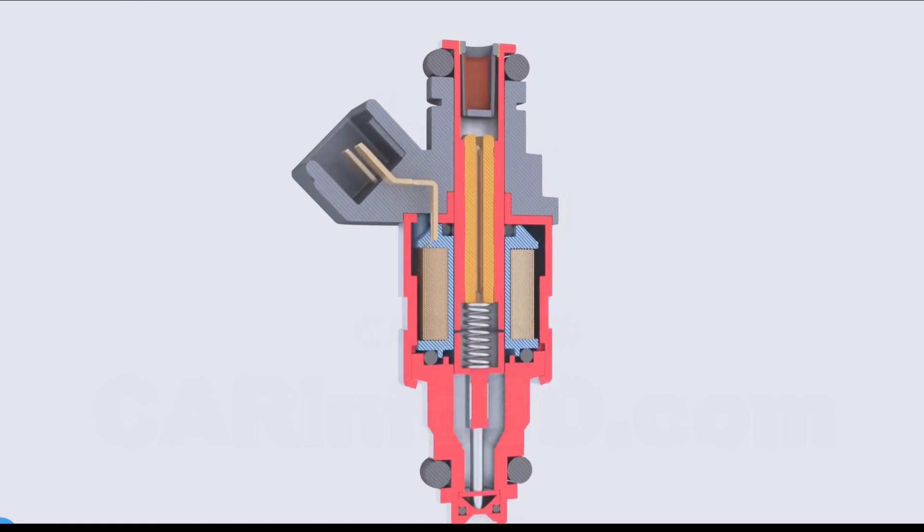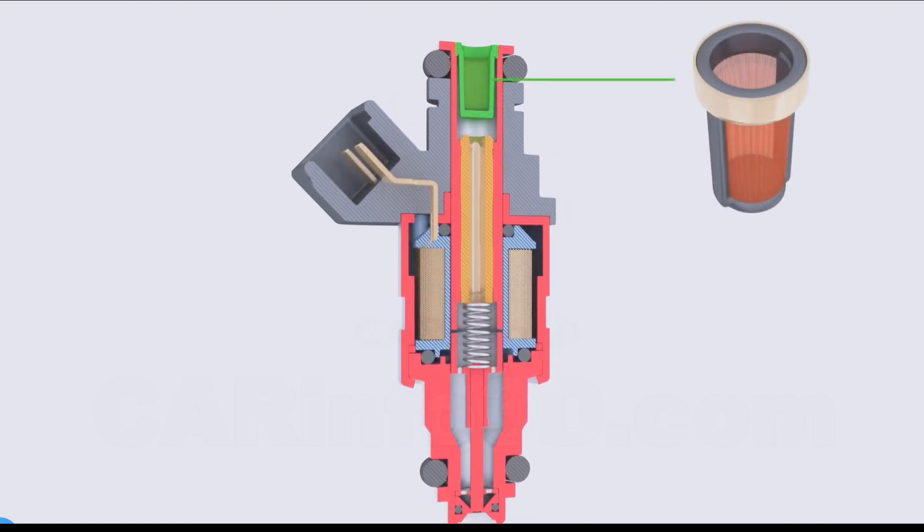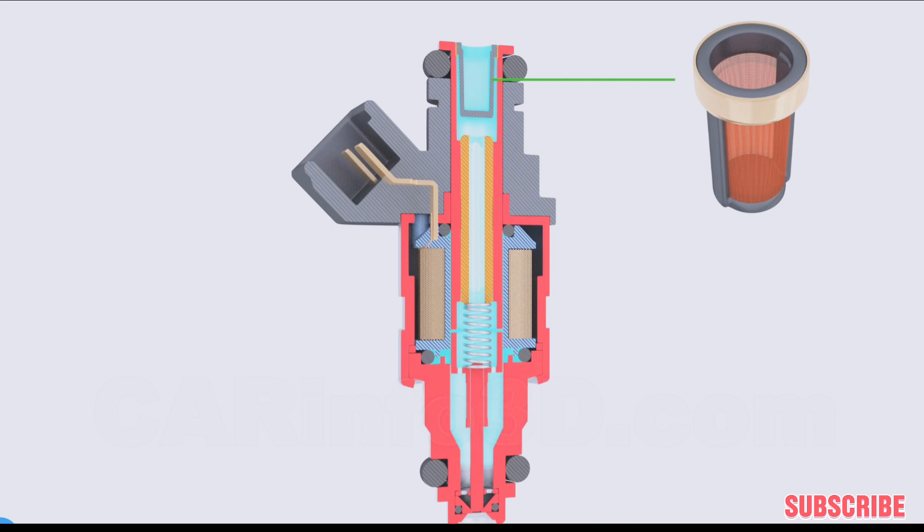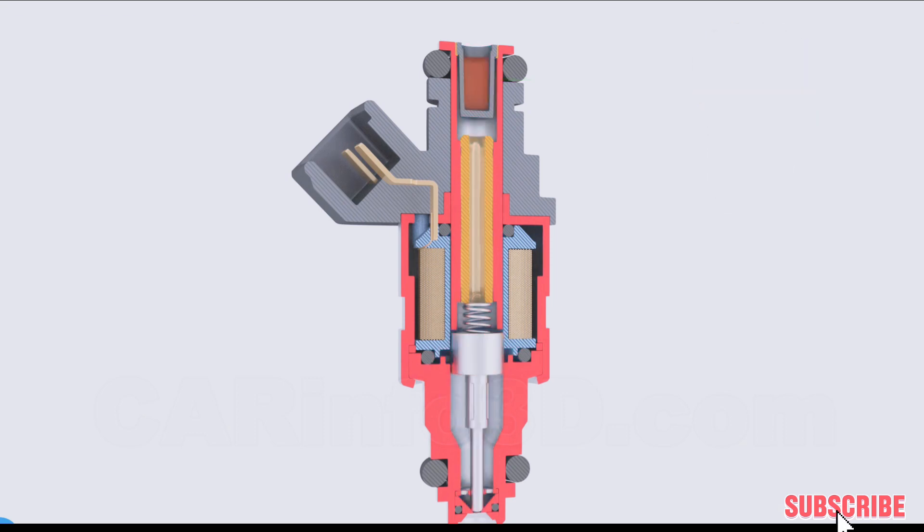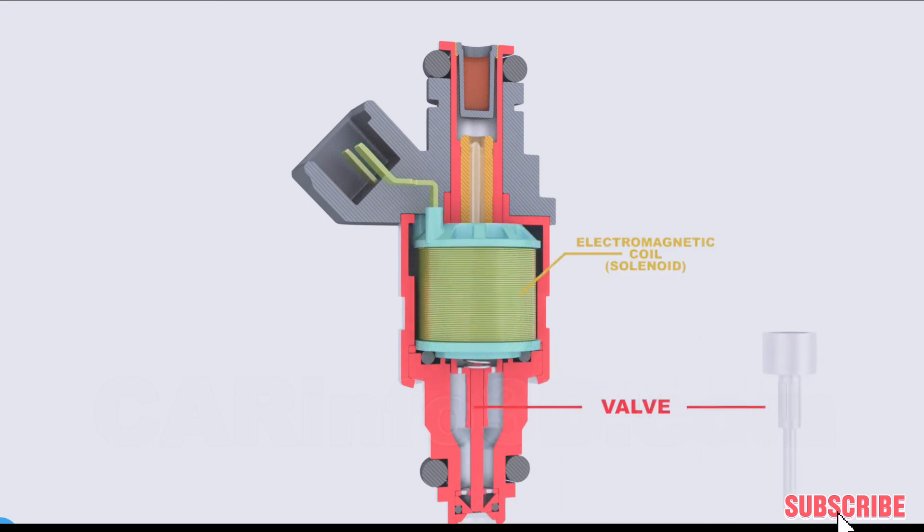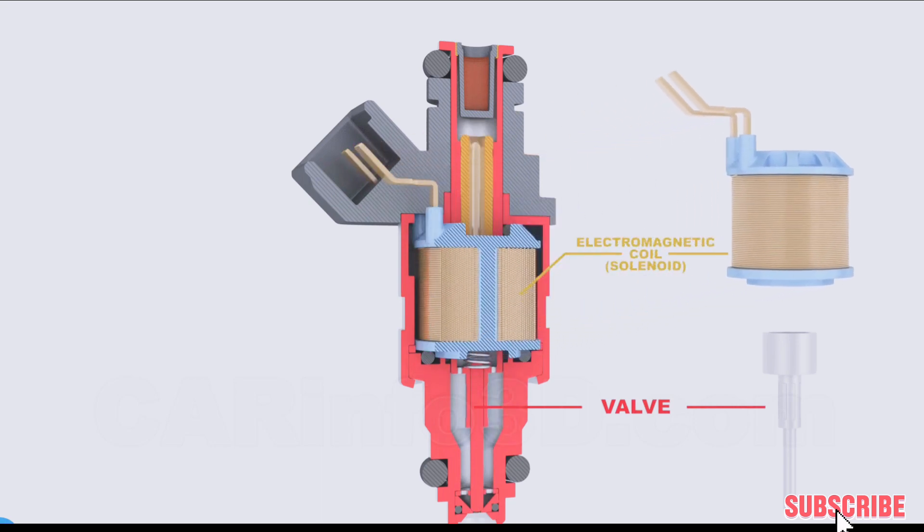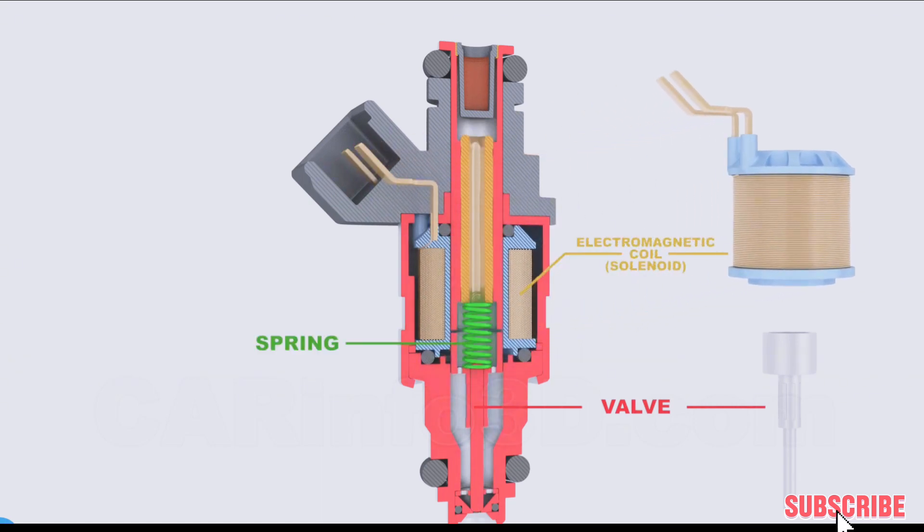Let's take a look inside. As you are aware, the inlet has a filter. As the fuel passes through the filter, it enters the injector and fills the cavity inside. Regardless of fuel pressure, nothing happens as long as the system is at rest. The injector's main components are the valve and the electromagnetic coil. The spring rests against the sleeve, pushing the valve towards the valve seat and preventing fuel injection.